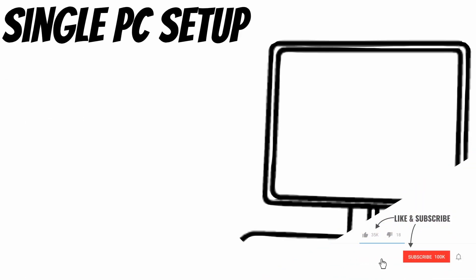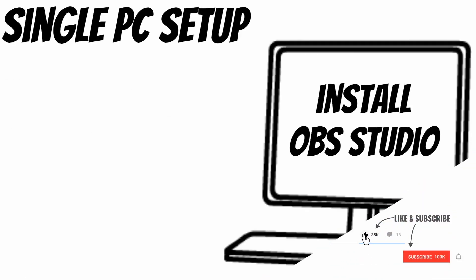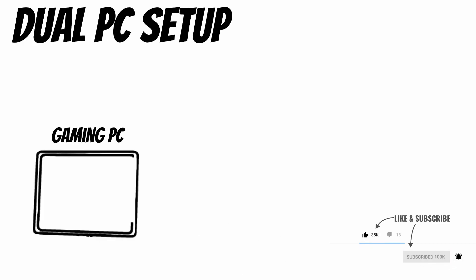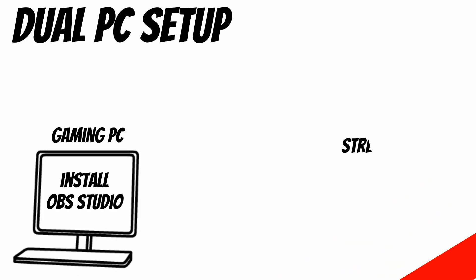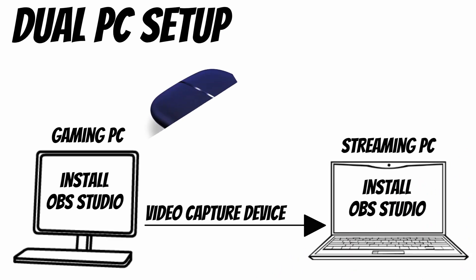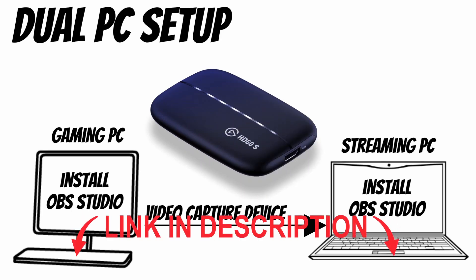For a single PC setup you only need that single PC with OBS Studio installed. For a dual PC setup you're also going to need a second PC — the streaming PC — and a video capture device. In my case I'm using the Elgato HD60s, a great little external capture device, and I've got an Amazon affiliate link in the description down below.